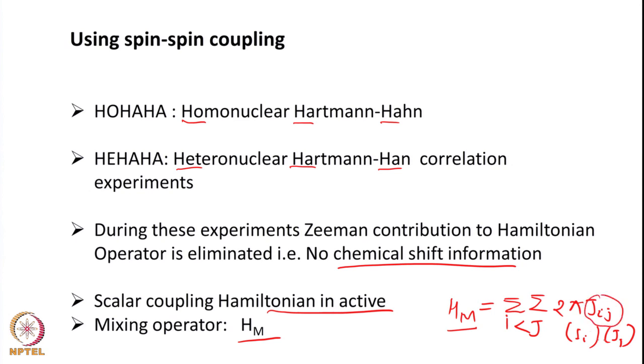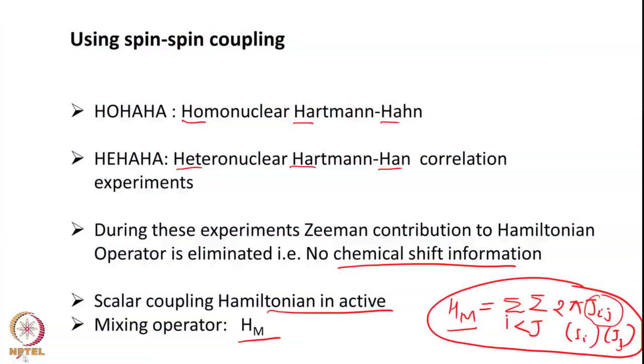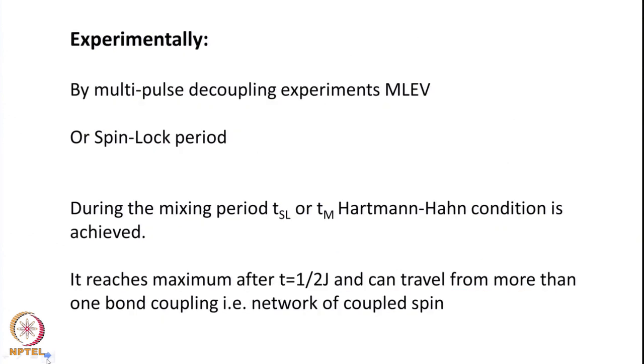Experimentally, this is done by a multiple-pulse decoupling experiment called MLEV, named after scientist Malcolm Levitt who developed this sequence. During this spin-lock period (TSL), or mixing period, we achieve the Hartmann-Hahn matching condition, and once that matching condition is achieved, transfer happens from one nucleus to another — from more sensitive to less sensitive nuclei or even in the homonuclear fashion.